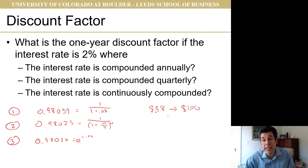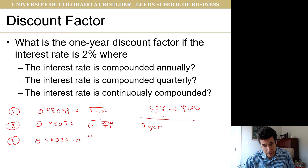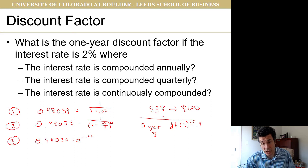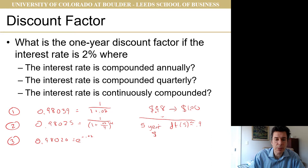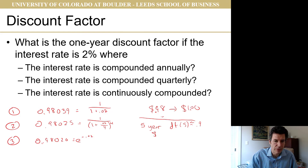If instead of a one-year discount factor this were a five-year discount factor, I earn about 2 cents per year, so my guess would be the discount factor for five years is approximately 0.90. So our three discount factors are 0.98039, 0.98025, and 0.98020.